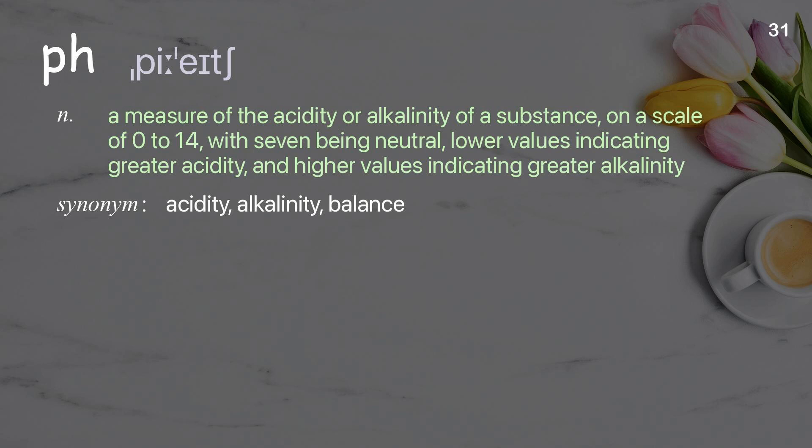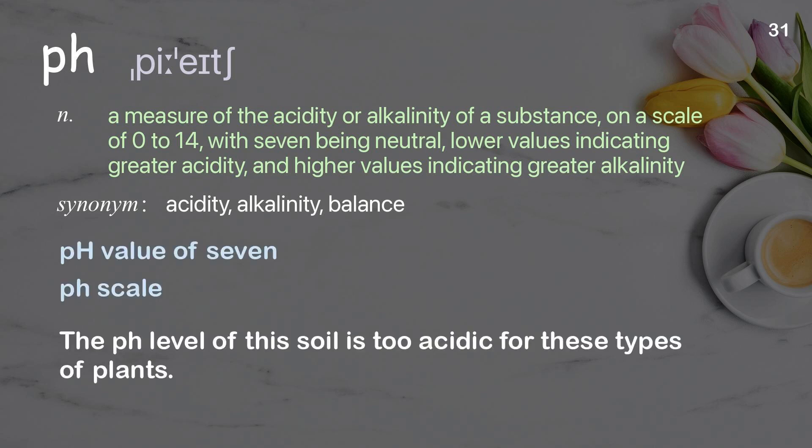pH: A measure of the acidity or alkalinity of a substance on a scale of 0 to 14, with 7 being neutral, lower values indicating greater acidity and higher values indicating greater alkalinity. Examples: pH value of 7. pH scale. The pH level of this soil is too acidic for these types of plants.